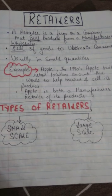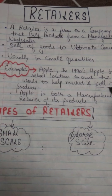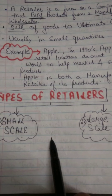Continuing with Channels of Distribution, today's topic is retailers. A retailer is a firm or company that buys products from the manufacturer or from wholesalers and then sells those goods to the ultimate consumer, usually in small quantities. For example, Apple is both a manufacturer and a retailer — in the 1990s Apple built retail locations around the world to market and sell its products.